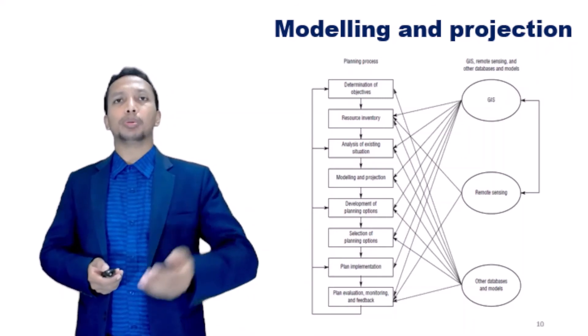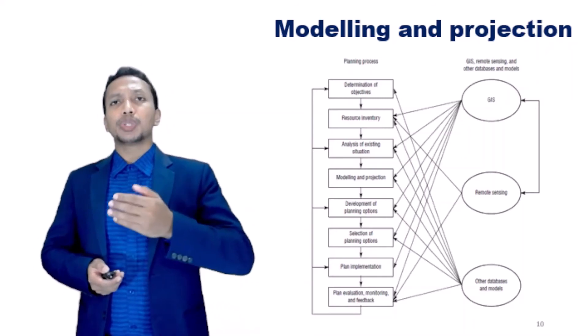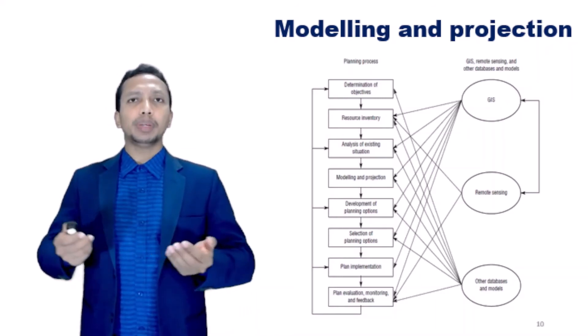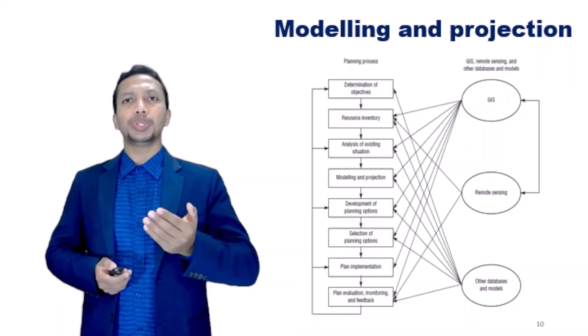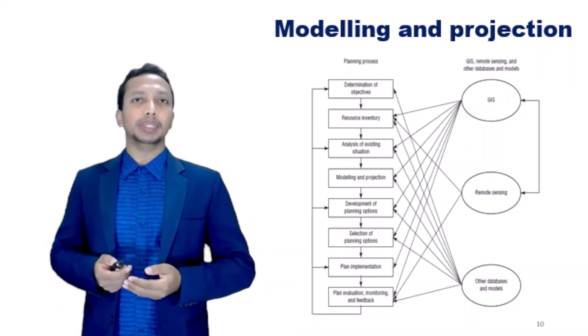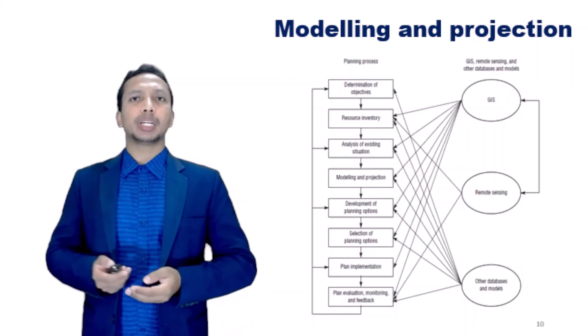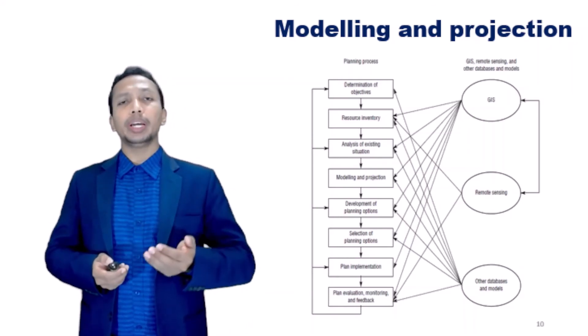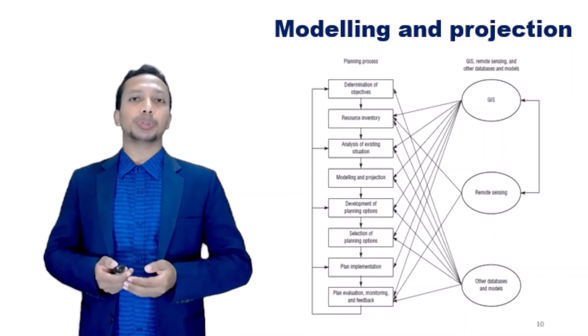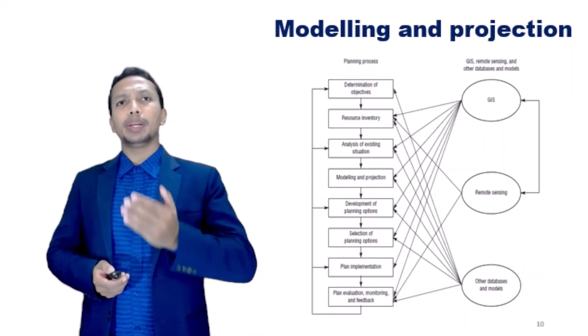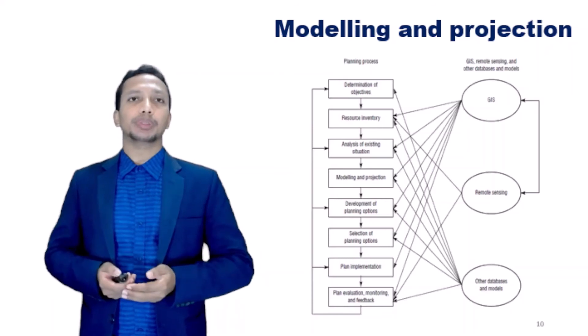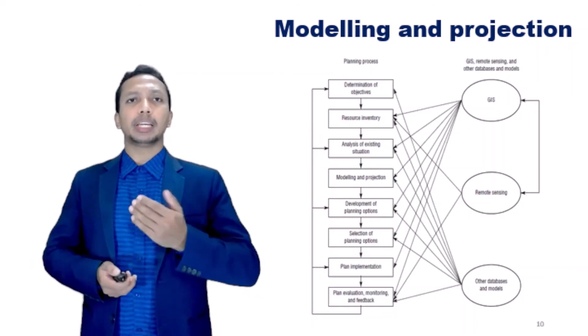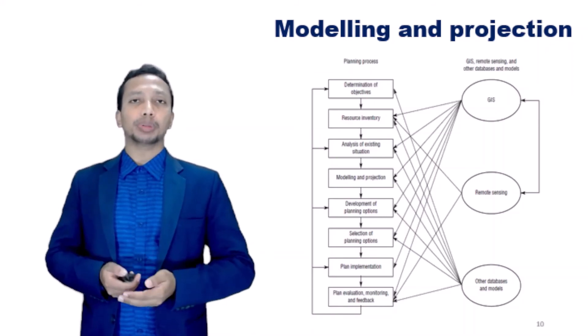Development of planning options. Land suitability maps are very useful in the development of planning options. They can be used to identify the solution space for future development. The association of spatial optimization models with GIS can help to formulate and develop planning options which try to maximize or minimize some objective functions. The simulation of different scenarios of development with GIS can help in developing planning options.